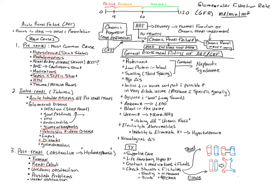Now let's talk about some major problems in nephrology. One of the big problems we run into is acute renal failure, or ARF — a failure of the kidneys to function that occurs rather quickly, generally over hours to days, with a very rapid onset and presentation. There are three major causes of acute renal failure: pre-renal, intra-renal, and post-renal, and the cause has to do with where — in or outside of the kidney — the problem lies.